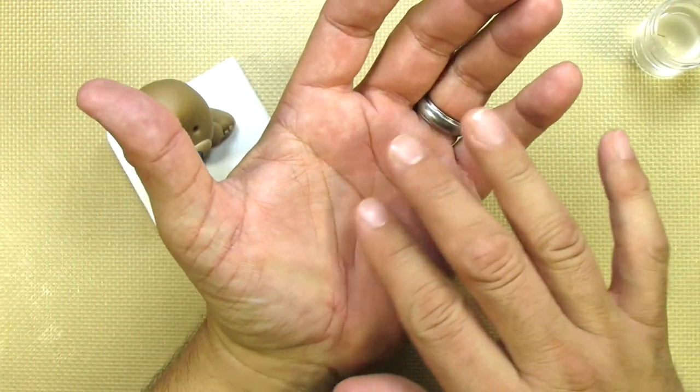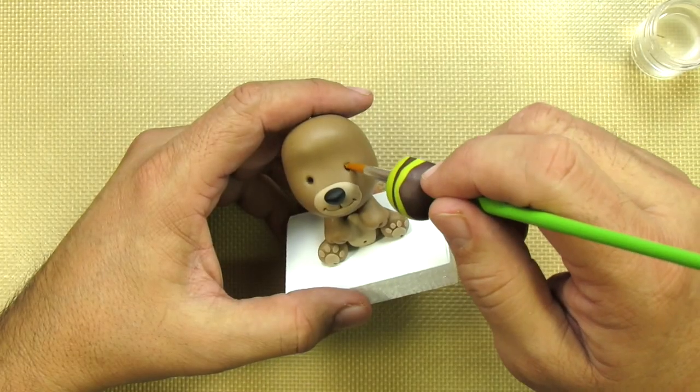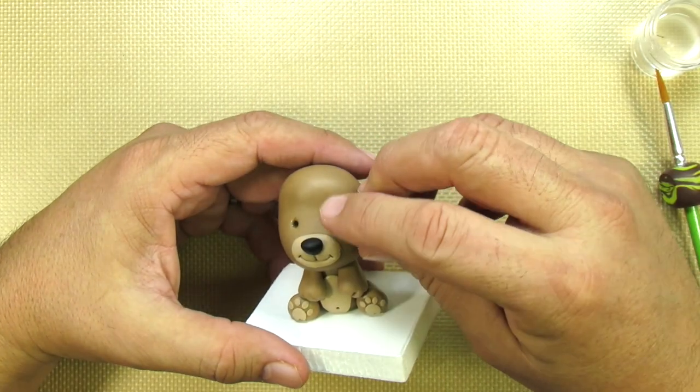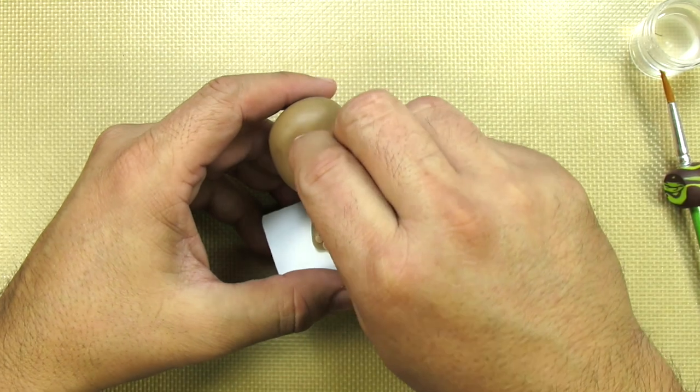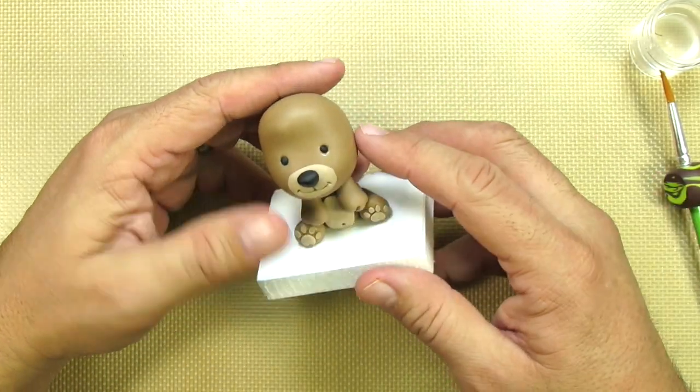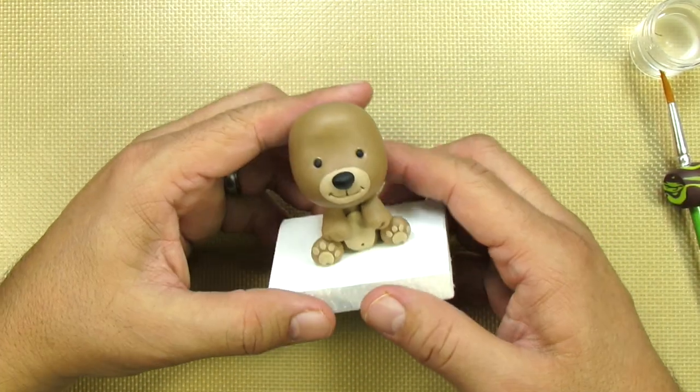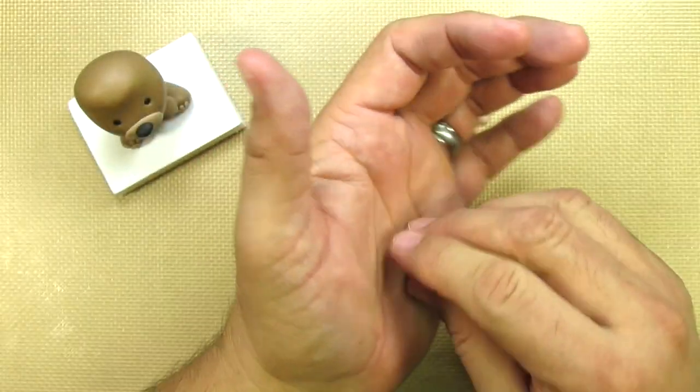And now he's rolling out the tiniest little eyes in the world. The trick is getting them in the hole and not dropping them. When we do drop stuff like this, there's no point in even looking for them. Just make another one.